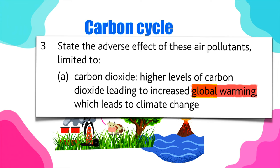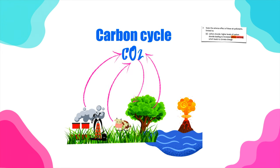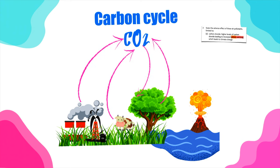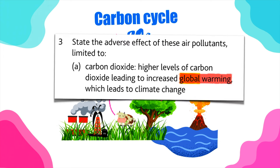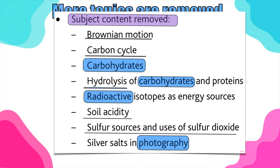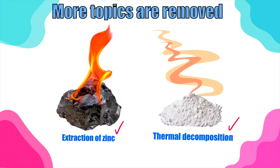You still need to learn about the carbon cycle because you still have the global warming and greenhouse effect topic as part of your syllabus — you wouldn't really understand how the greenhouse effect comes about without it. Also, you learn a lot about the carbon cycle in biology. Importantly, the Cambridge publication didn't mention the extraction of zinc and thermal decomposition of metal compounds, but they are no longer part of your syllabus. These used to come up a lot in exam papers, so you no longer need to learn anything about these two components.